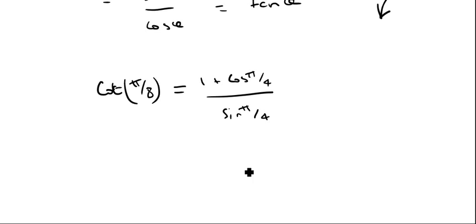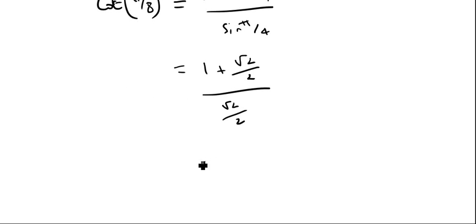Okay, and cos π over 4 and sine π over 4 are two of the values that you're expected to know for the exam. That is going to be 1 plus root 2 over 2, over root 2 over 2, and that will simplify to give me 1 plus root 2.